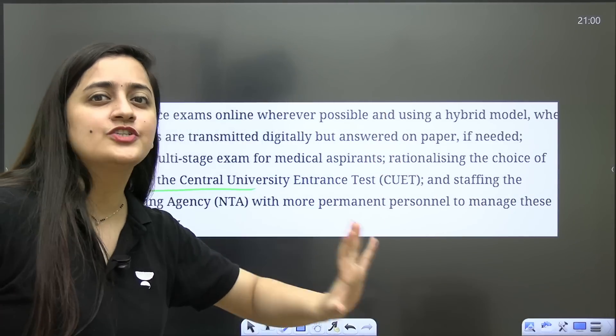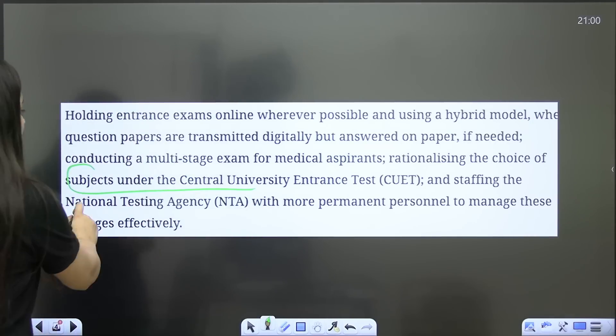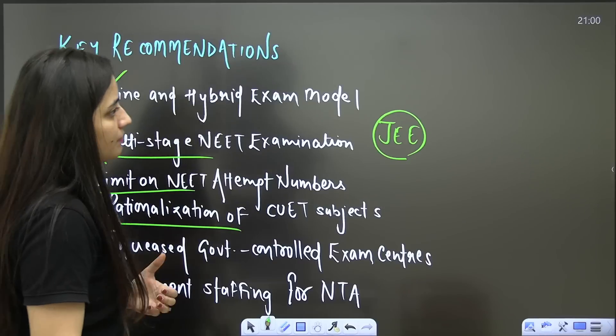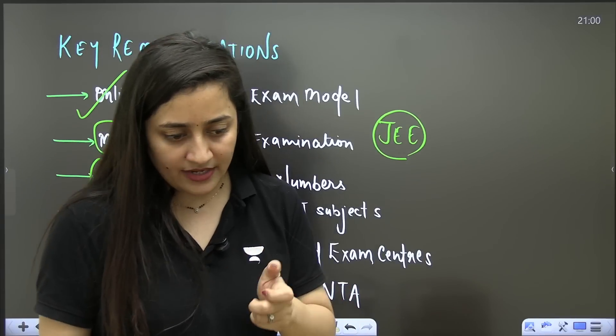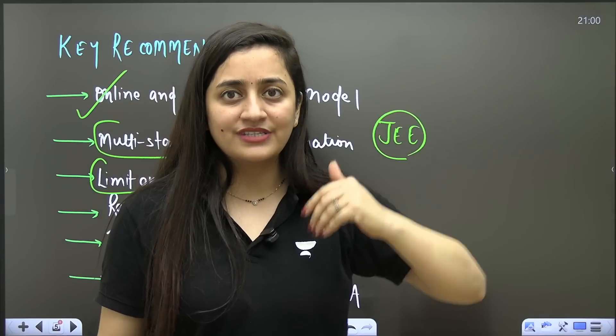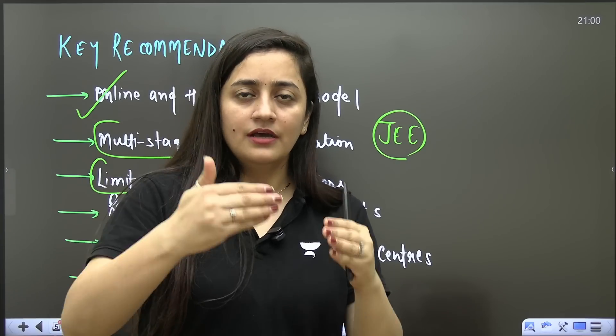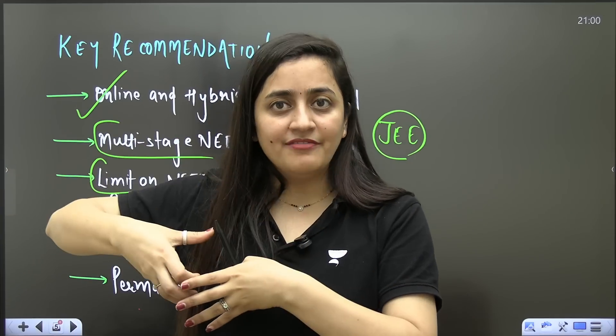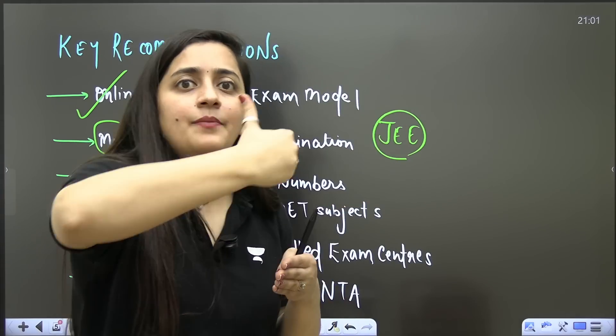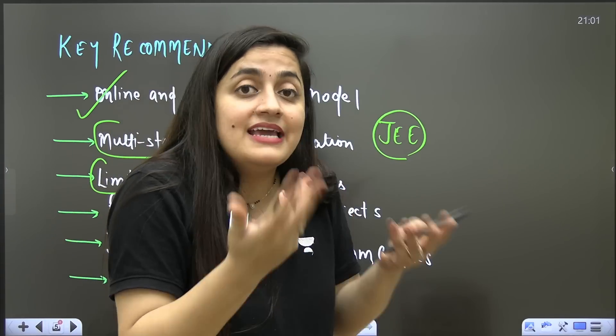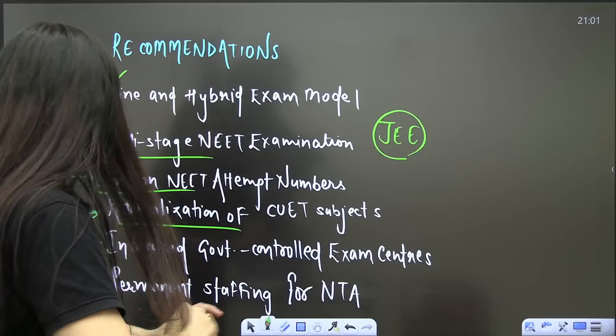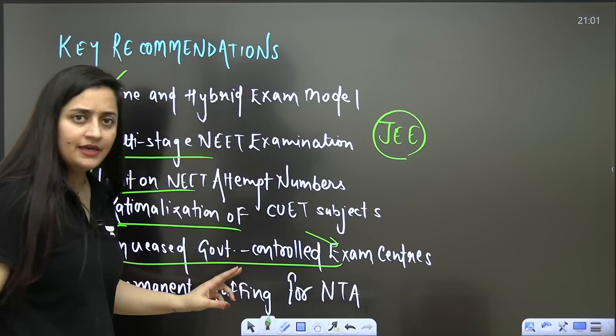Staffing the NTA with more permanent personnel to manage these changes effectively. The number of aspirants is more and NTA outsources. They outsource the exam conduction, and let's say there is a private company conducting the exam. Obviously there are chances of leak, maybe there are people involved in it and they just leak the paper.